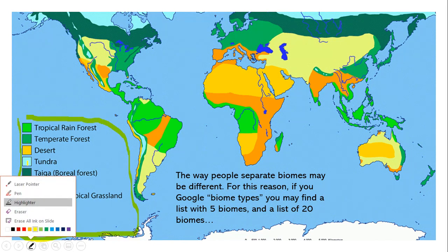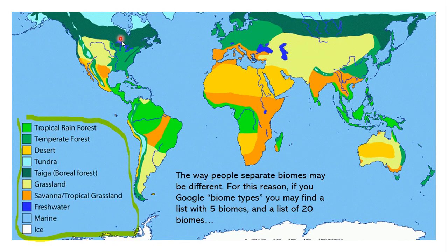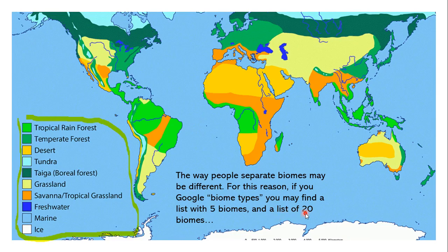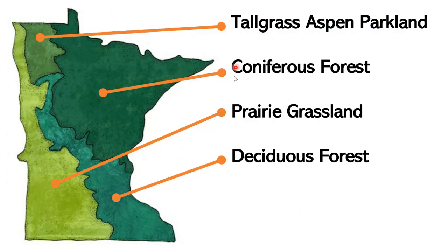It's a little confusing because Minnesota is shown here as a temperate forest biome, but as you will see, when we get into that specific list of biomes, Minnesota actually has four biomes in our state. That's because there are vastly different organisms living in those biomes, so we want to make sure we label them differently.